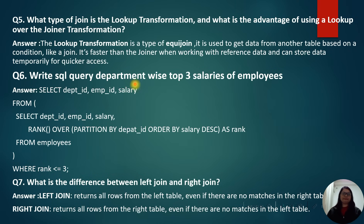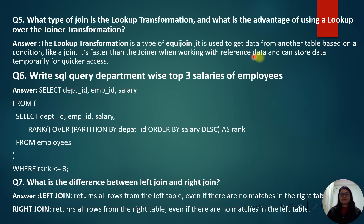The next question is: what type of join is the lookup transformation and what is the advantage of using a lookup over the joiner transformation? The lookup transformation is a type of equi-join. It is used to get data from another table based on a condition. It is faster than the joiner transformation when working with reference data and can store data temporarily for quicker access.